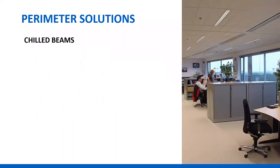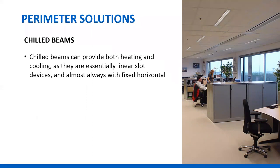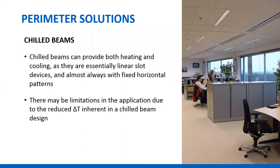Chilled beams have been used at the perimeter — they're best used in a temperate climate. Because a chilled beam is an induction device, the discharge temperature will not be as cold or as hot as the supply air or the coils producing heating or cooling. As a result, there are limitations to how much perimeter load they can actually handle. In a non-temperate climate, you might want to consider baseboard or other solutions in the perimeter zone along with chilled beams. There is inherent limitation due to the reduced delta T in a chilled beam design.